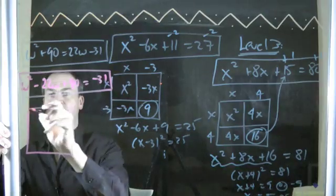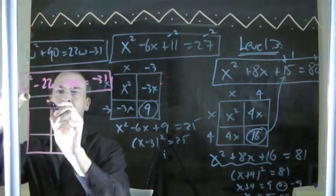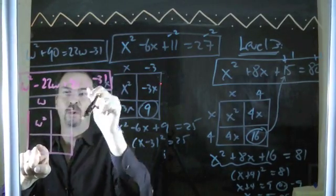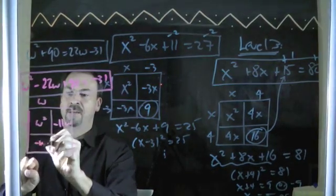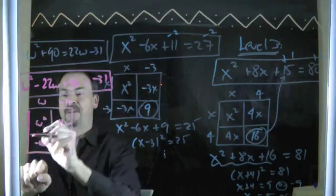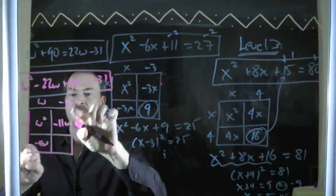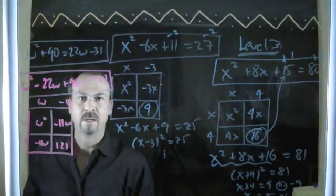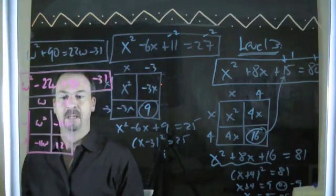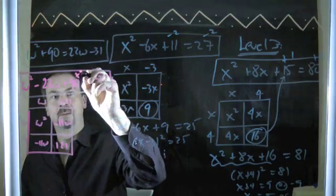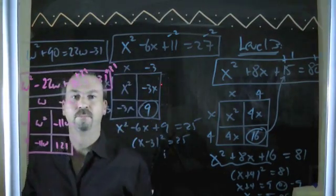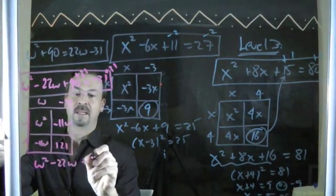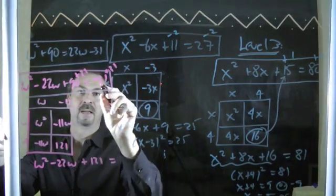Here I go. Off I go. Is this a square in disguise that I can make a square? w squared must come from w and w. Two symmetrical pieces making negative 22w. Negative 11w. Negative 11w. Must be negative 11. Negative 11. The final piece is negative 11 times negative 11. Makes 121. I don't have 121. I have 90. How do I make 90 into 121? Well, let's add 31 to both sides. Beautiful.